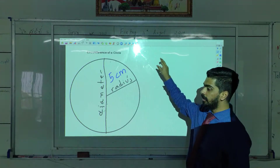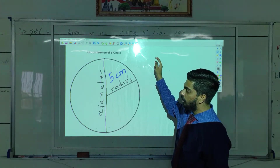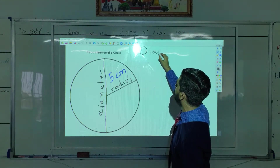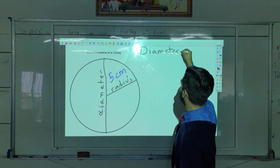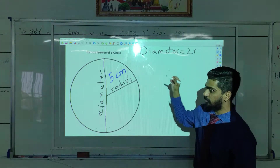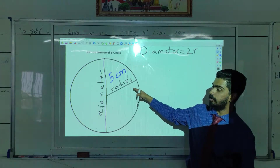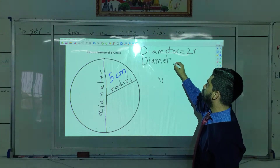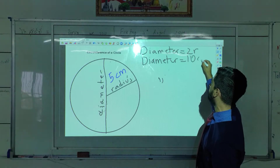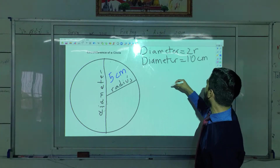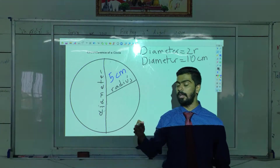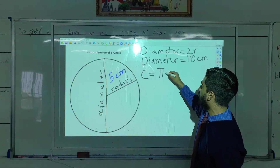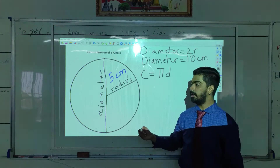Okay guys, in the last one we found the circumference when we knew the radius. Now you'll be learning how to find the circumference when we know the diameter. The diameter is equal to two times the radius. The formula to find the circumference when we know the diameter is simply C = πd.